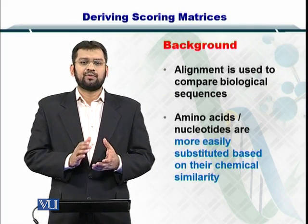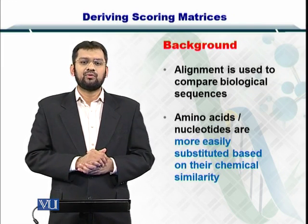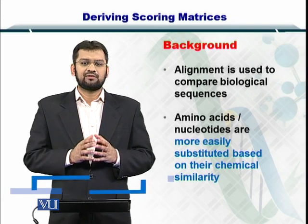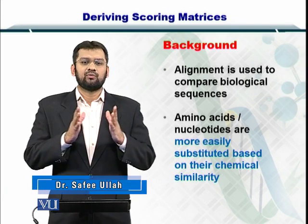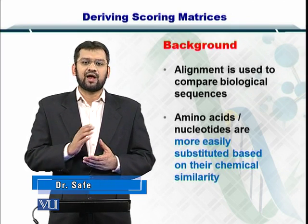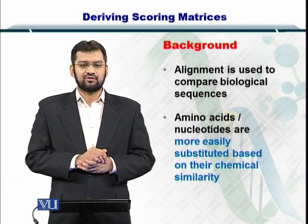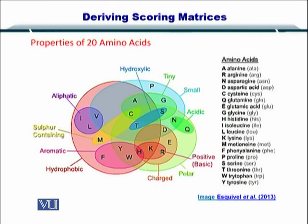You already know the purpose of scoring matrices and their utilization. But just to give you an overview, we compare biological sequences by aligning them, or we call it pairwise sequence alignment. And during this alignment, we rank the matches between sequences using scoring matrices. So by looking at the chemical properties of these amino acids, we can actually see which amino acid should get a higher score and which amino acid substitution should get a lower score.